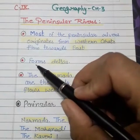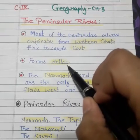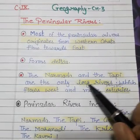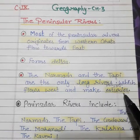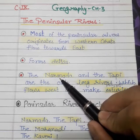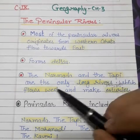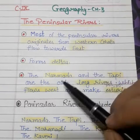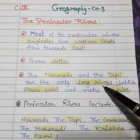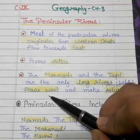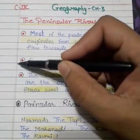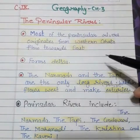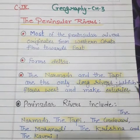These peninsular rivers form deltas. However, there are only two rivers — Narmada and Tapi — which flow west. All other peninsular rivers flow east, while Narmada and Tapi are the exceptions flowing westward.